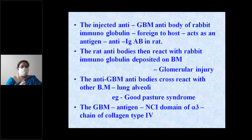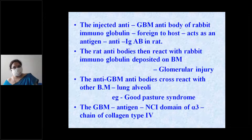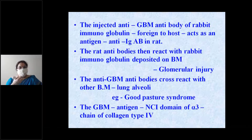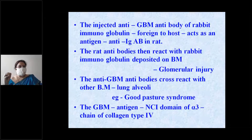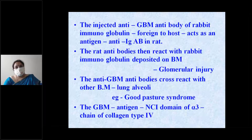There is also a cross-reaction: not only were rat antibodies produced against the rabbit immunoglobulin, but these rat antibodies also reacted with the lung alveoli. This condition is seen in Goodpasture syndrome, where anti-glomerular basement membrane antibodies cross-react with the basement membrane of the lung alveoli.